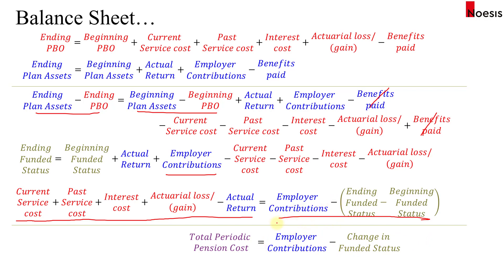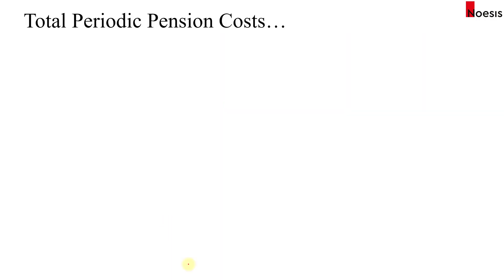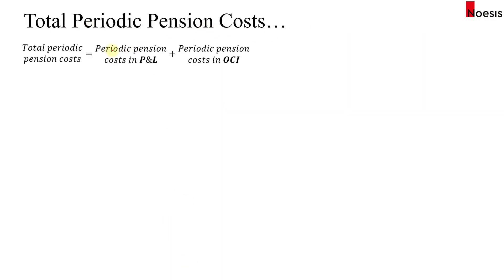That derivation shows how the formula is obtained, which makes it easier to remember. So again, the total periodic pension cost equals the periodic pension cost in the P&L plus the periodic pension cost in OCI.